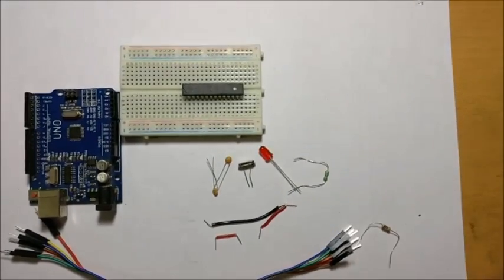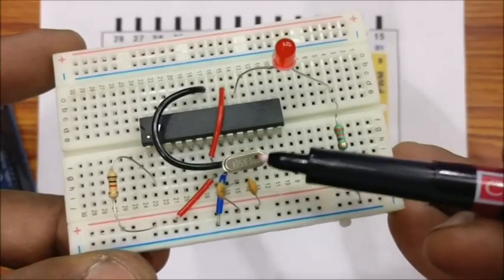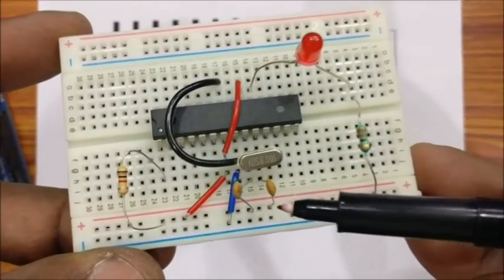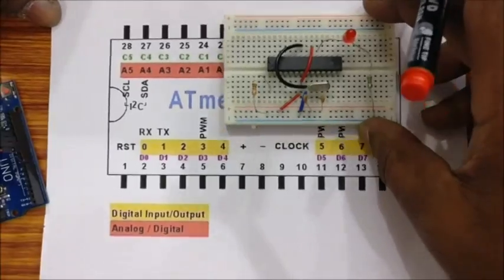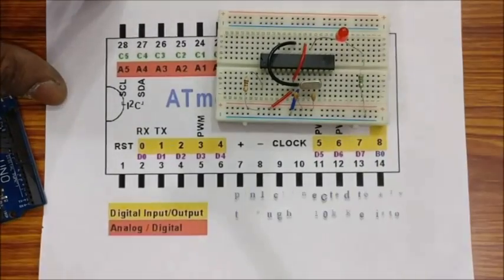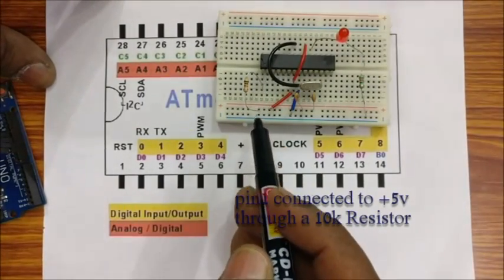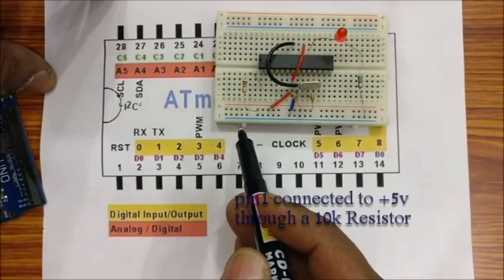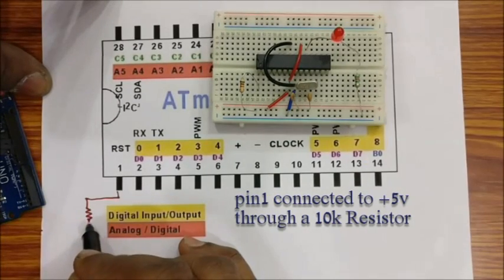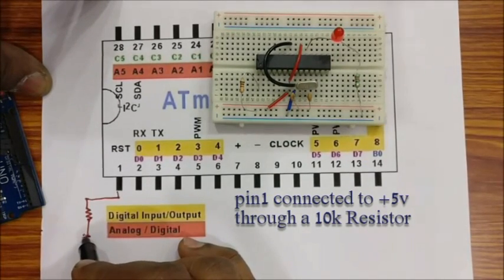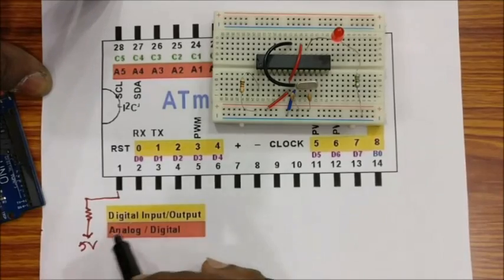Let us see the connection details on breadboard side. Pin 1 of ATmega328 IC is reset which is to be connected to plus 5V rail through a 10K resistor. If you want you can connect a reset switch at pin 1.